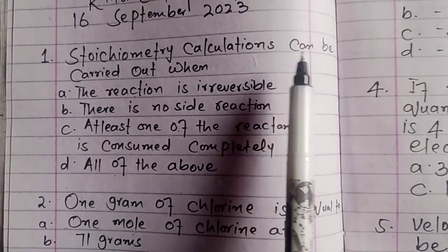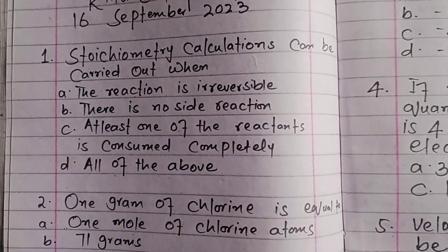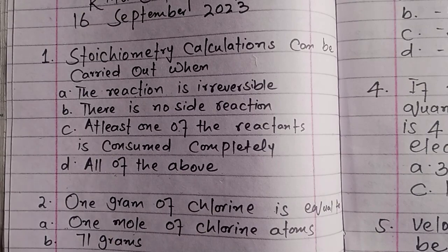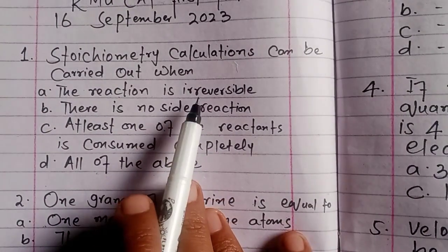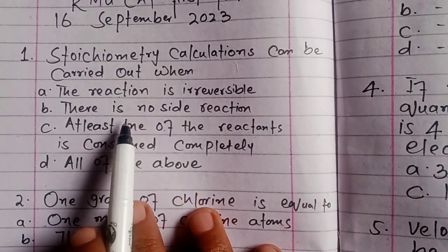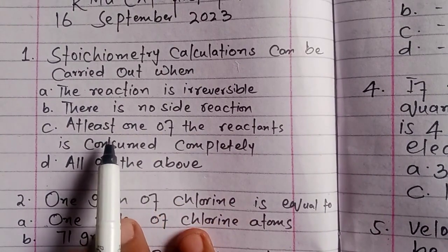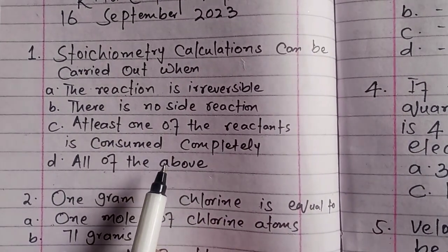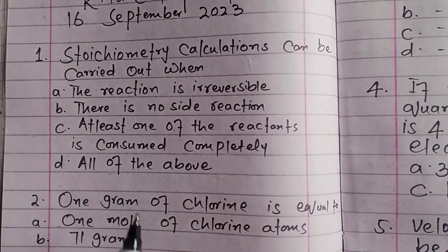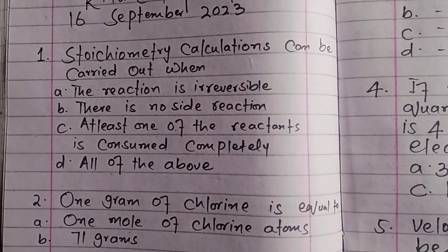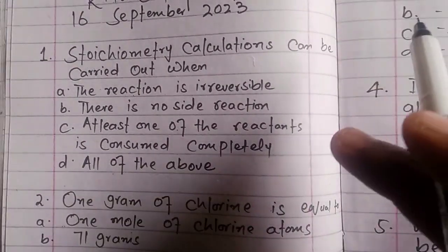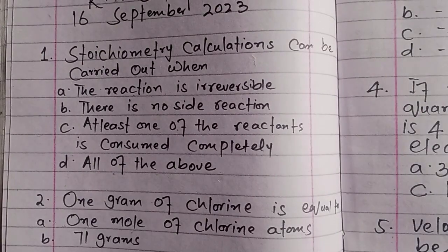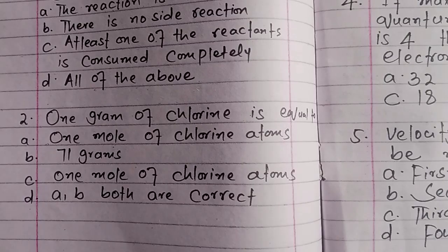Stoichiometry calculations can be carried out when: the reaction is irreversible, there is no side reaction, and at least one of the reactants is consumed completely. These are the conditions under which we can perform stoichiometry calculations. We need to know all of these conditions to proceed with stoichiometry.